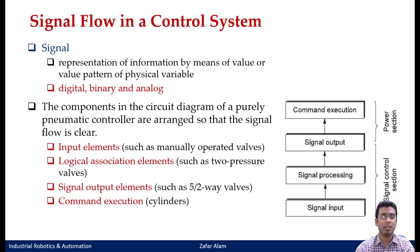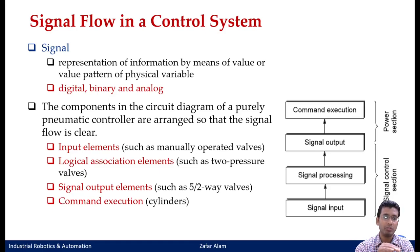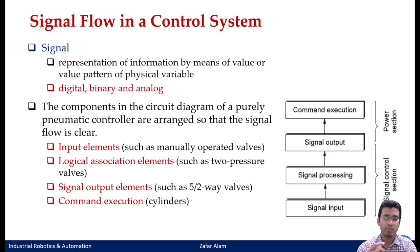Now comparing it to your pneumatic circuit, the input elements would be manually operated valves or mechanically operated valves using roller valves. Those were your input elements. Then you have your signal processing element in between, in which you do all your logical operations. For example, we used a dual pressure valve for AND logic and a shuttle valve for OR logic — so we were processing those signals.